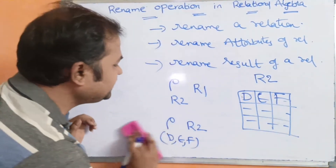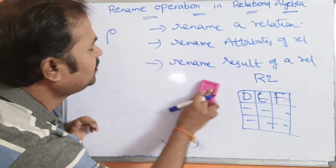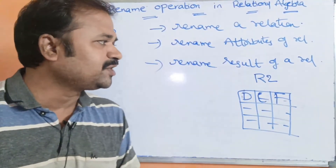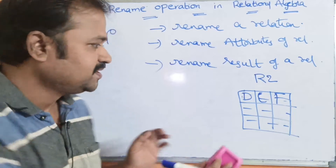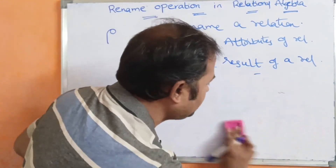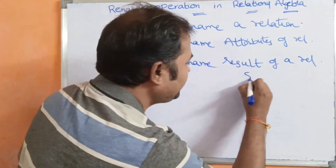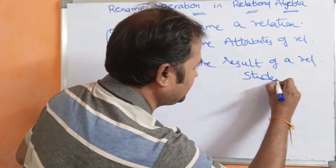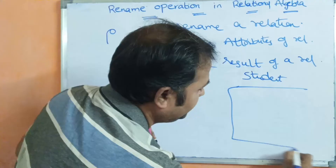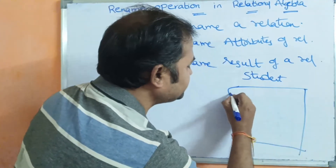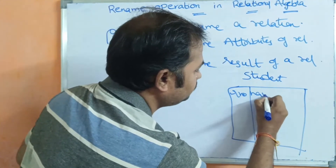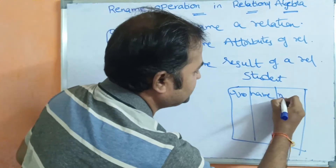Now let us see the third task of the rename operator: it is useful in order to rename the result of a relation. Let us take a student table. Let the student table contain three attributes: roll number, name, and marks.